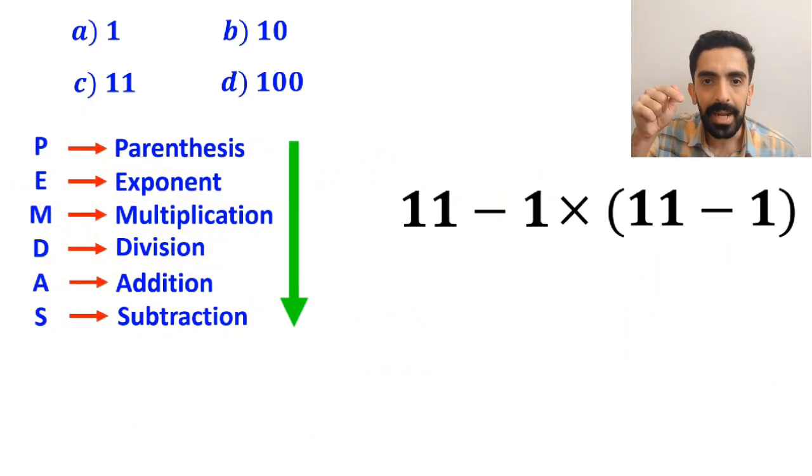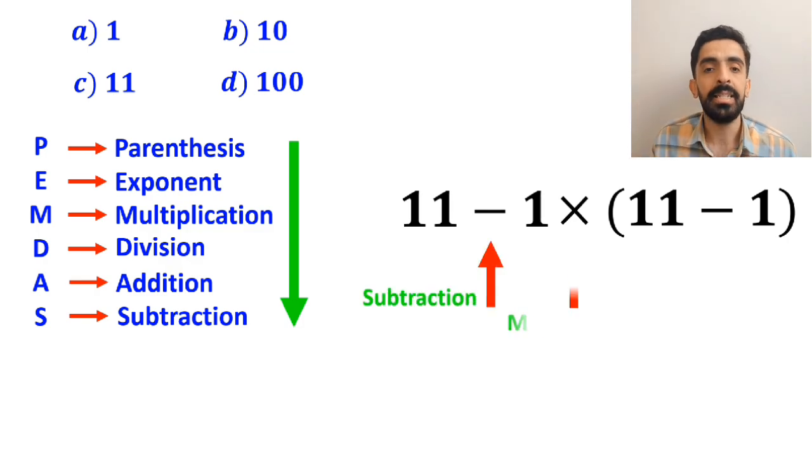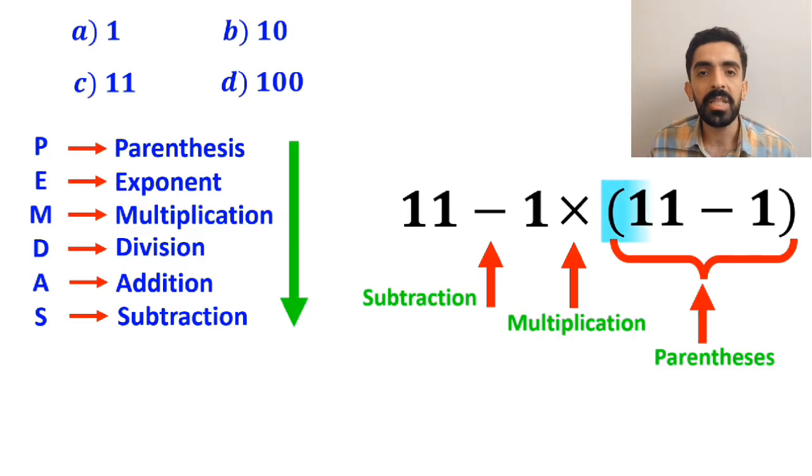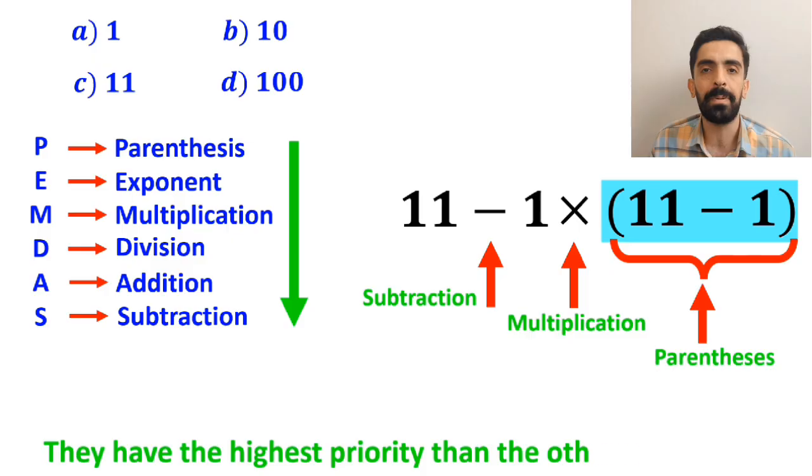As you can see in the image, in this expression, first we have a subtraction sign, then a multiplication sign, and finally parenthesis. We must start with the parenthesis because they have the highest priority over the other operations.